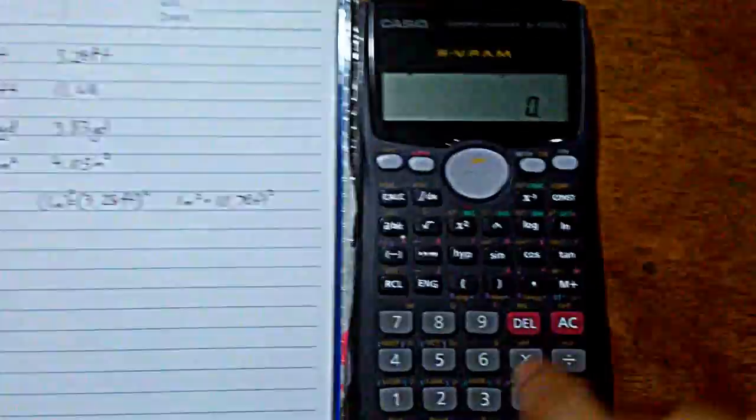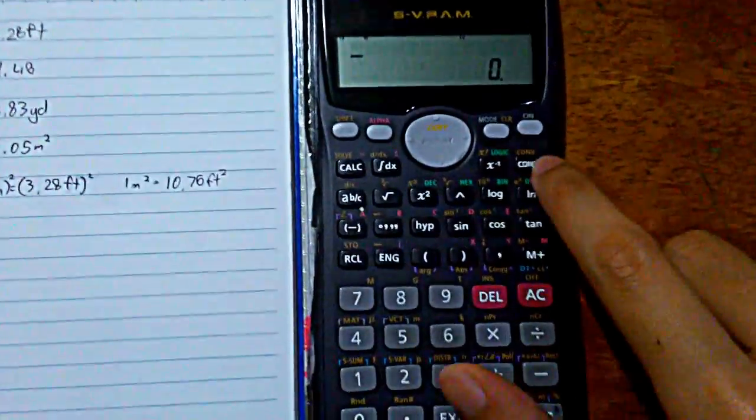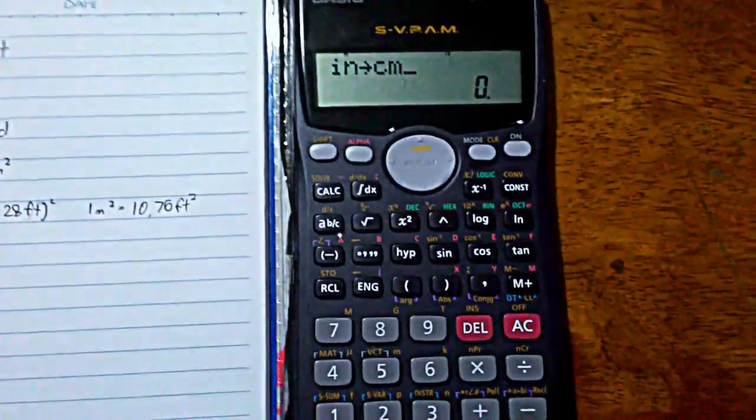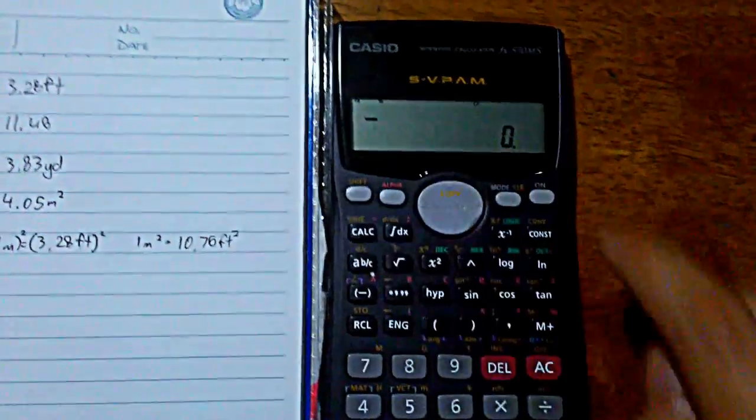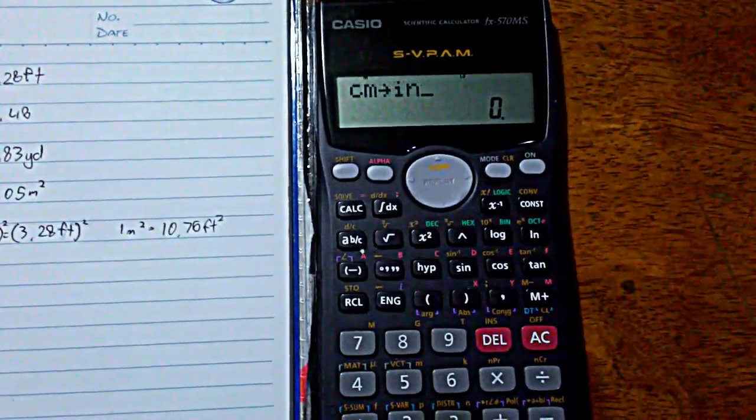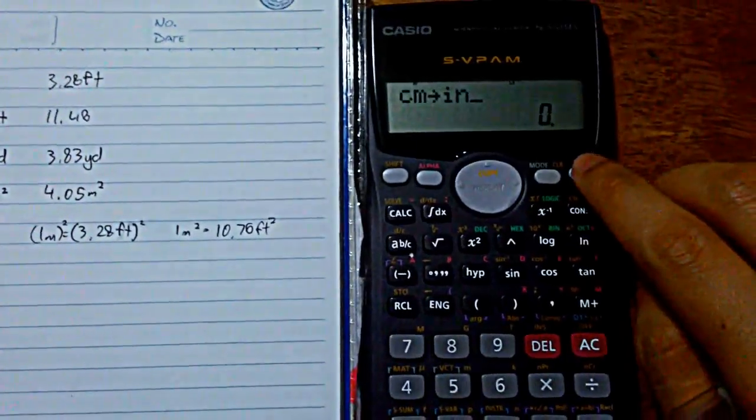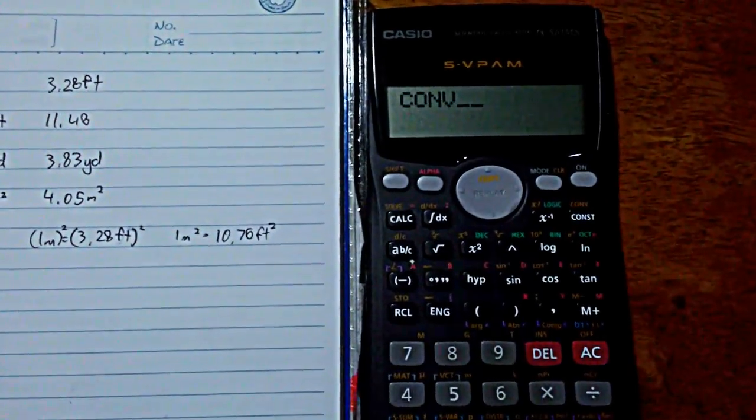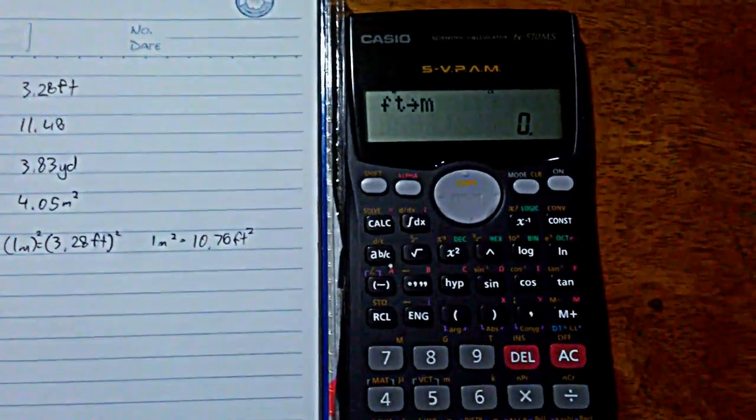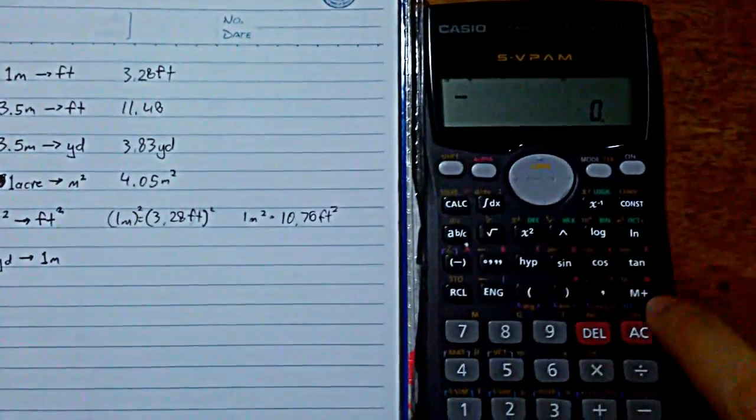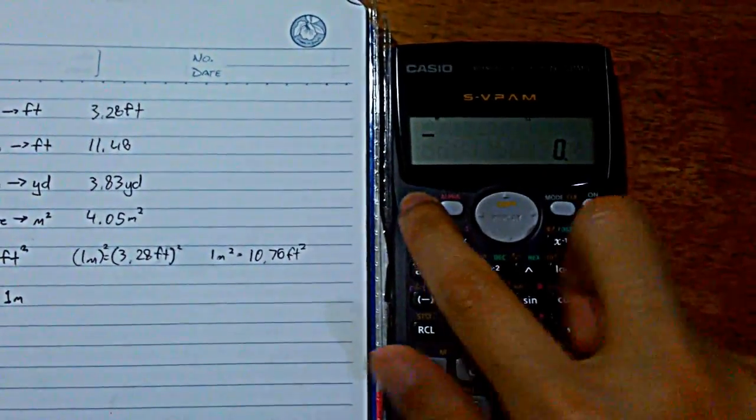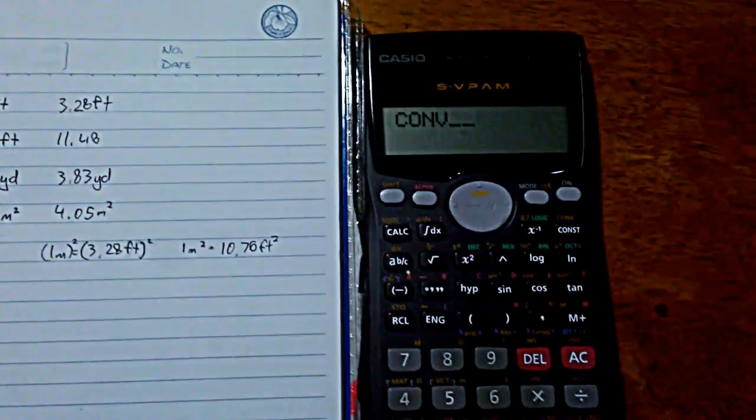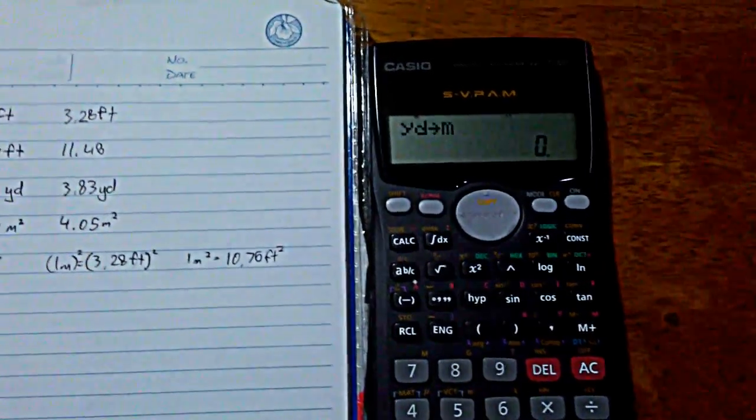So shift convert, 0, 1. That's from inches to centimeters. It's not what we want. Shift convert again, 0, 2. No, it's not that. 0, 3. No, it's not. 0, 4. Still not that. How about 0, 5. Yards to meters. That's what we want. Yards to meters.